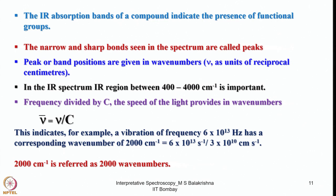Narrow and sharp bands seen in the spectrum are called peaks. Band positions are given in wavenumbers as reciprocal centimeters. The IR region between 400 to 4000 cm⁻¹ is very important — most functional groups have absorption in this region. The frequency divided by c, the speed of light, provides the wavenumber. For example, a vibration frequency of 6×10¹³ Hz divided by 3×10¹⁰ cm/s gives a wavenumber of about 2000 cm⁻¹.